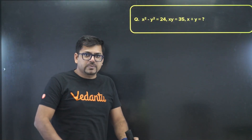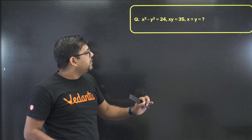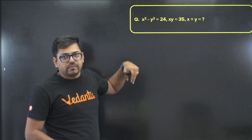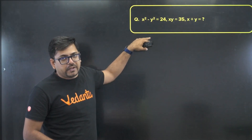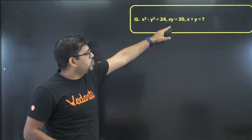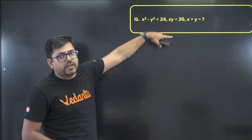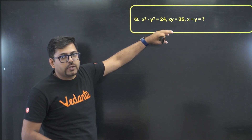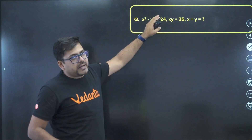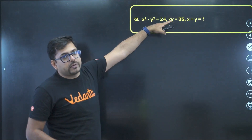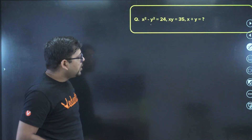However, that is not going to work here. Because if you square both sides you'll get x² plus y², whose value you don't know, and you won't be able to use the value of x² minus y² in that scenario. So that approach won't be possible.